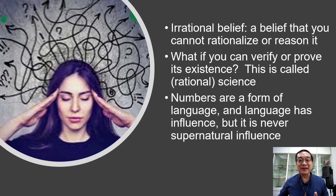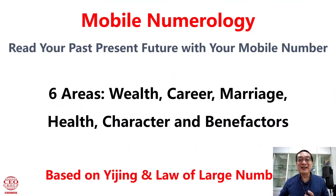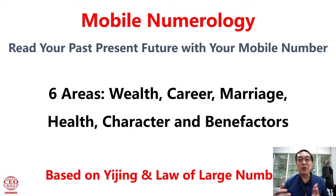We all know mobile numerology is based on numbers, and numbers are a form of language — a human influence, definitely not a supernatural influence. Mobile numerology says you can read your past, present, and future with just your mobile number, covering six areas of life: your wealth, your career, your marriage and relationships, your health including mental health, your personality and strengths and weaknesses, and your benefactors.